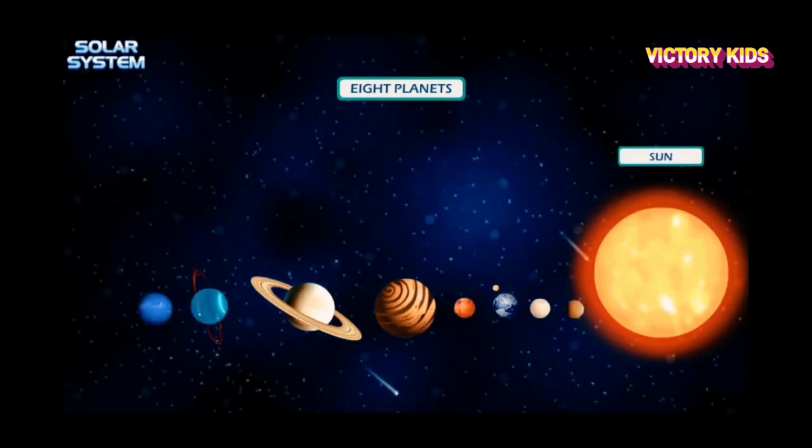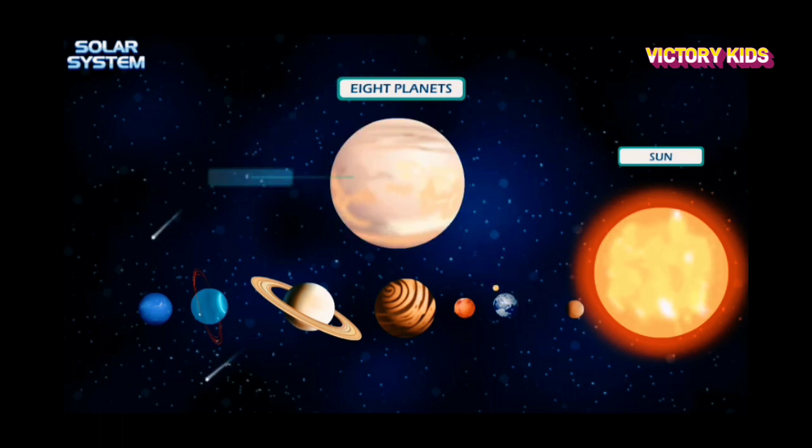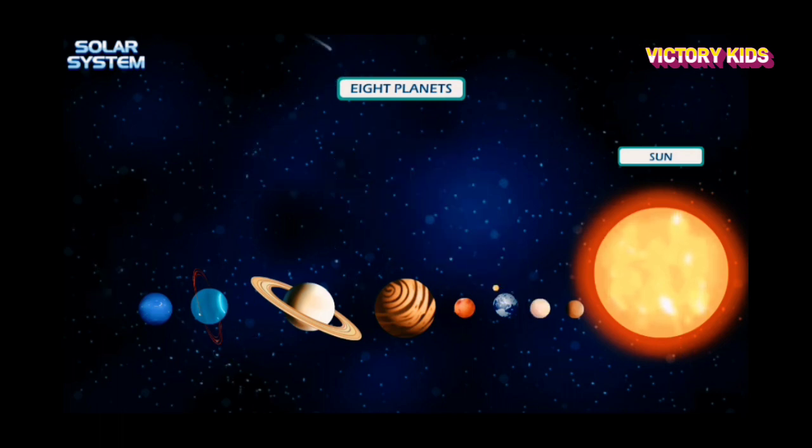All the planets and the moons use sun rays for their light. There are eight planets in our solar system. They are Mercury, Venus, Earth,